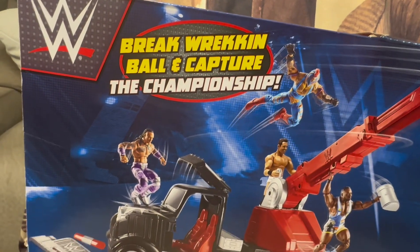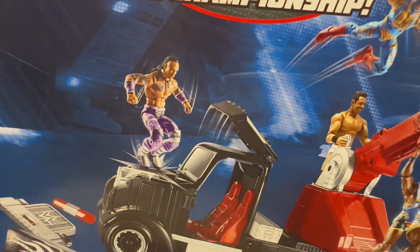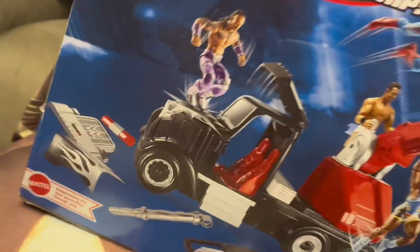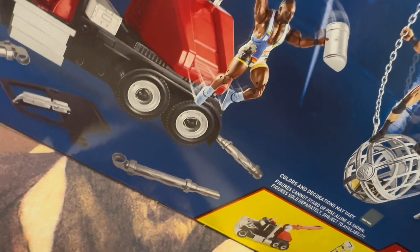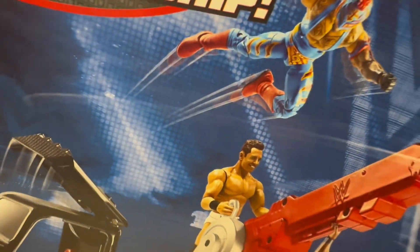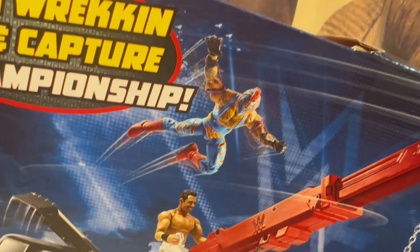You got your launching action. Got this for that price right there. Break wrecking ball and capture the championship. You got Damian Priest, the vehicle half destroyed all over the place. There's all the parts that can come off. There's Big E just hanging out, there's the Miz, there's Rey Mysterio flying.